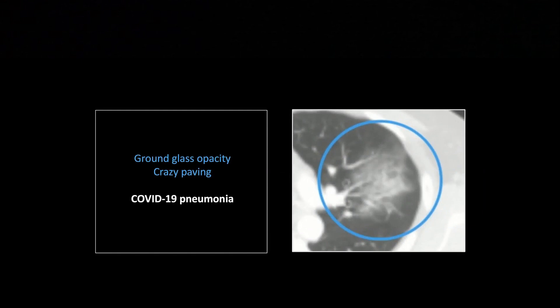When it gets worse, it will range into frank consolidation and get pretty nonspecific in its appearance. But early on, this is a great way to catch it. It will typically be bilateral, rounded, and peripheral and demonstrate a combination of ground glass and crazy paving.